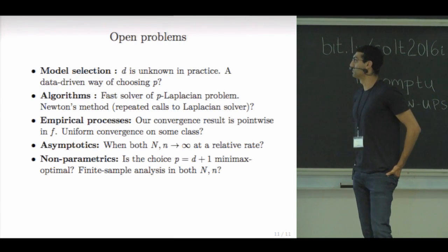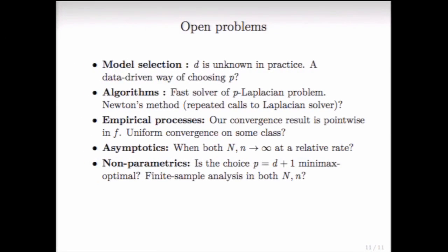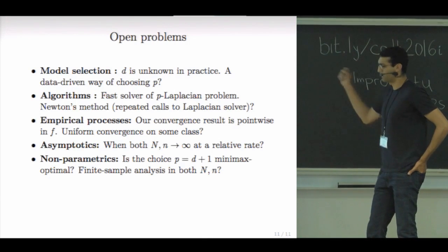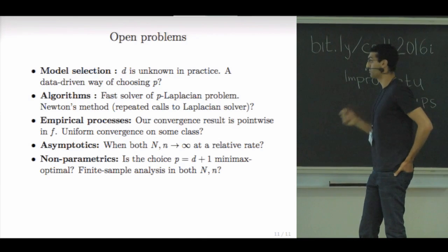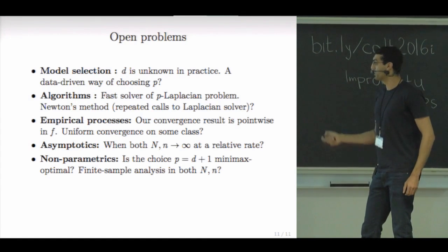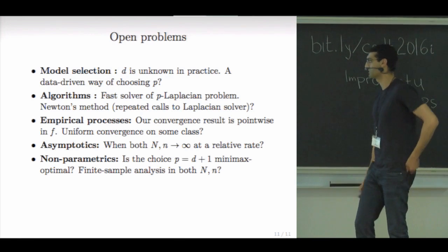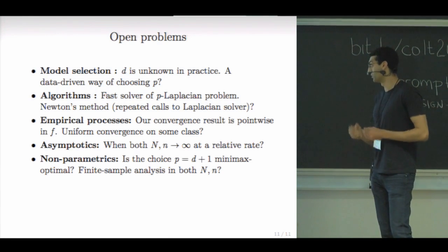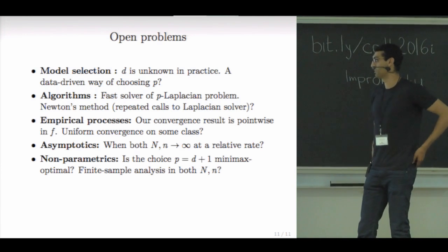So I'm going to end up with some open problems that are raised by our work. So the model selection problem first is that D is unknown in practice. So is there a data driven way to have chosen P? The algorithmic question, of course, is there a fast solver for the P Laplacian problem? So we think that a Newton method could solve the problem because it requires repeated calls to Laplacian solvers, but we didn't do the overall running time analysis. So that could be an interesting thing. There's an empirical process theory. The question is that our theorems hold for fixed F's and our theorems do not imply the convergence of the sequence of estimators. So can we prove a uniform convergence result on some class of functions? That could be an interesting question. And again, the asymptotic question, when N, the number of unlabeled points and the label, the number of labeled points grow relatively at a certain rate to infinity. That's something that we can tackle.